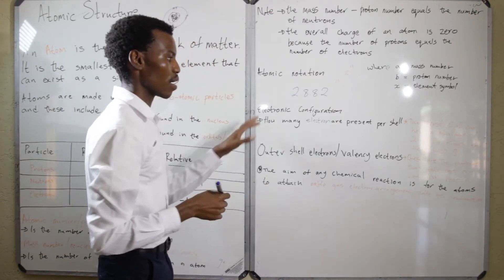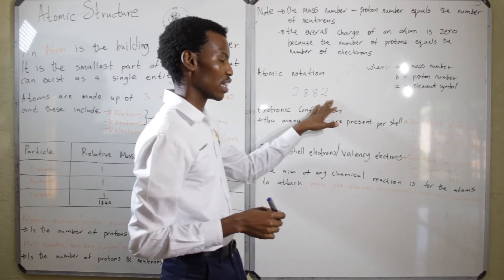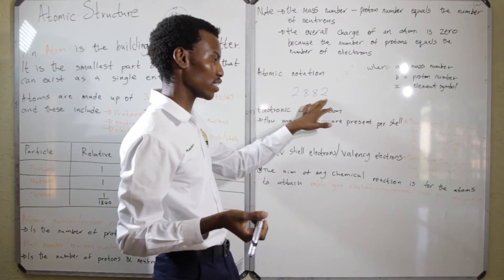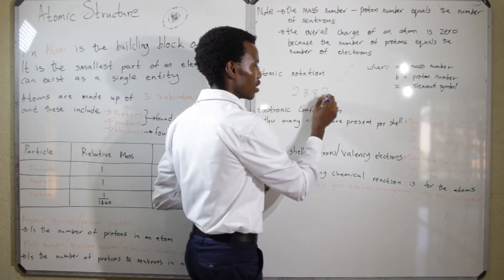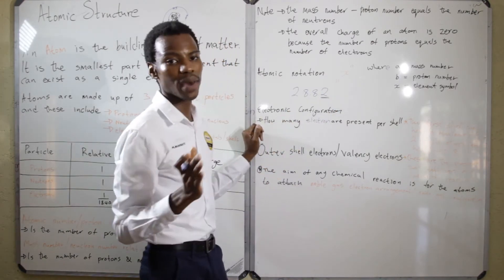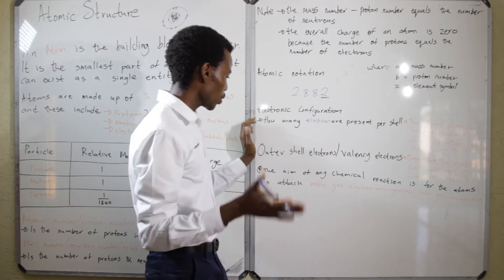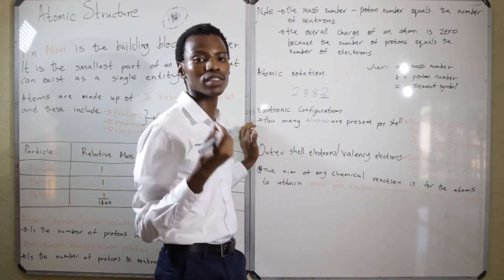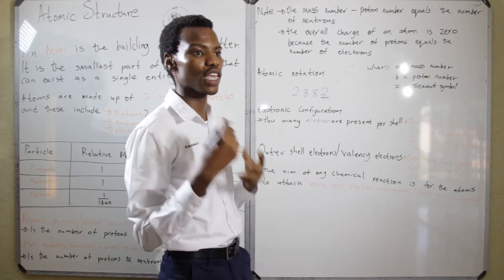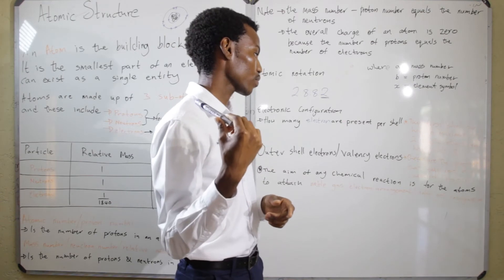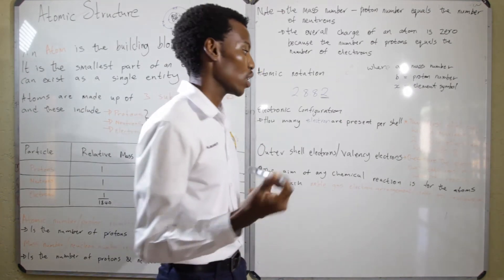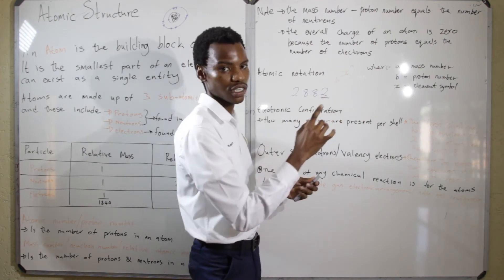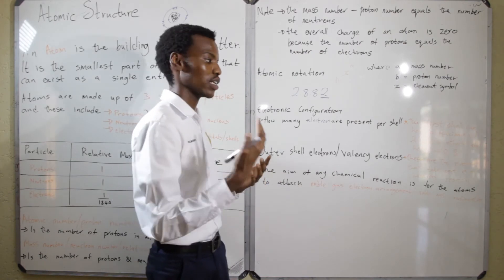Based on the number of shells that you can get, that will determine which period an element falls in, and based on the number of valence electrons — valence electrons being the electrons in the outermost shell — that will determine the group in which an element will fall in. So the outer shell electrons, or the valence electrons, are basically the ones that are responsible for chemical reactions. They give their element its chemical properties, and all elements that have the same number of valence electrons have the same or similar chemical properties.